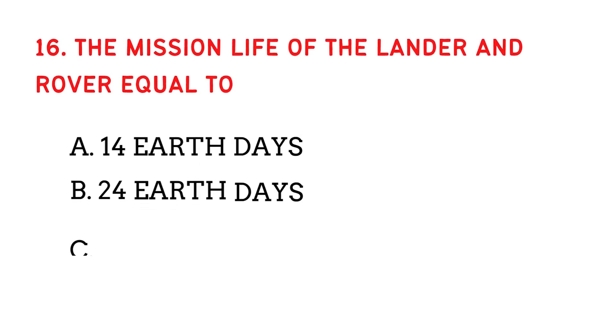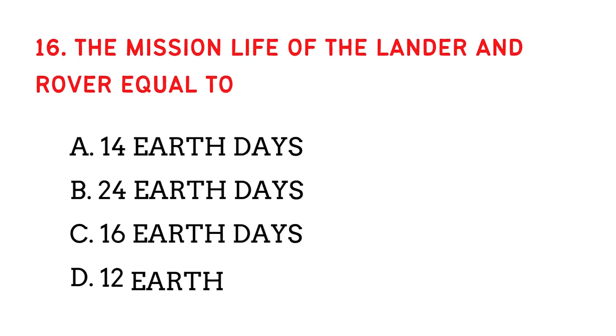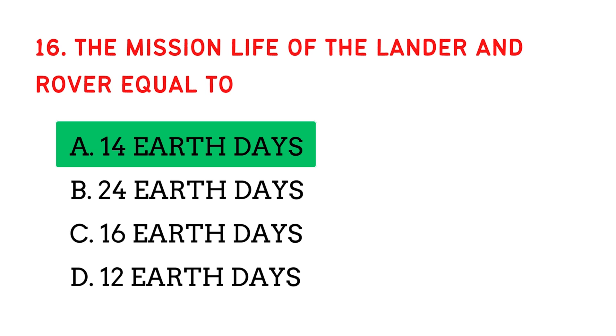The mission life of the lander and rover is equal to? The answer is 14 Earth days.